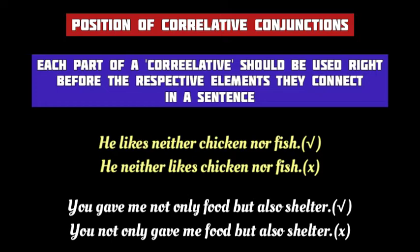So, it will be incorrect to use 'neither' before the verb 'likes,' as shown in the second example. Hence, 'He neither likes chicken nor fish' is grammatically incorrect. Similarly, in 'You gave me not only food but also shelter,' 'not only' comes right before 'food' and 'but also' is placed immediately before 'shelter.' If you put 'not only' away from the noun 'food' and before the verb 'gave,' it will be incorrect. Each part of a Correlative Conjunction must be placed immediately before the element it connects.